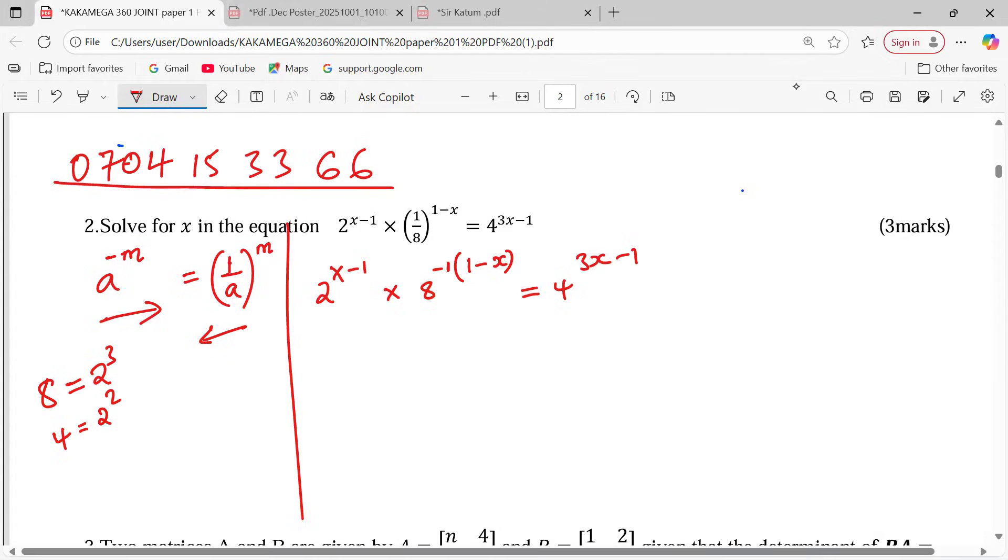Now with that understanding, you can proceed and say that this is 2 x minus 1 multiplied by, instead of 8, 2 power 3. And we're already having negative 1 plus x equals 2, 2 power 2. And we're already having 3x minus 1.